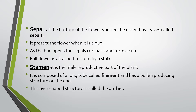Next is stamen. Stamen is known as the male reproductive part of the plant. In stamen, two main parts are there: filament and anther. Filament is a long tube structure that has pollen-producing structures on the ends. The oval-shaped structure is known as anther. So stamen is the male reproductive part of the plant and it has two structures: the anther and the filament.